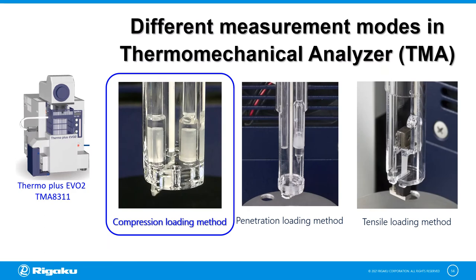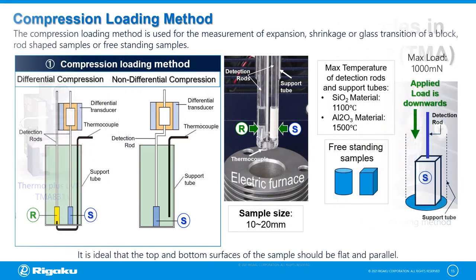In TMA, we have three basic measurement modes: compression loading method, penetration loading method, and tensile loading method. The compression loading method is used for the measurement of expansion, shrinkage, or glass transition of a block type, rod-shaped, or generally a free-standing material with 10 mm to 20 mm in length.